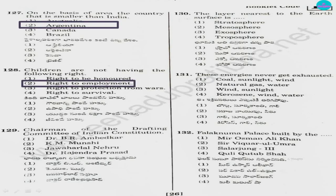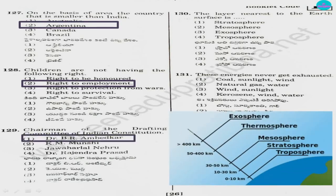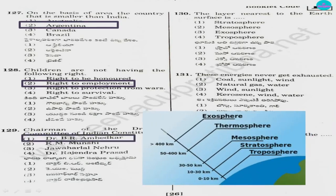Question 129. Chairman of the drafting committee of the Indian constitution: 1) Dr. B.R. Ambedkar, 2) K.M. Munshi, 3) Jawaharlal Nehru, 4) Dr. Rajendra Prasad. Answer is option 1, Ambedkar. Question 130. The layer nearest to the earth's surface — already I have given you the image. The first one is troposphere. So answer is option 4, Troposphere.